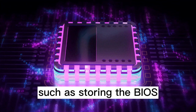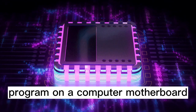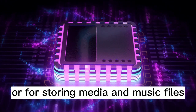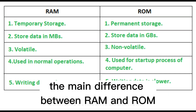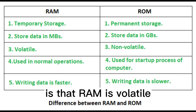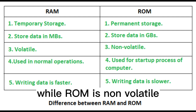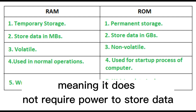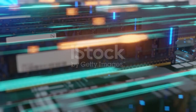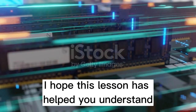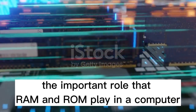Such purposes include storing the BIOS program on a computer motherboard, or for storing media and music files. The main difference between RAM and ROM is that RAM is volatile, meaning it requires power to store data, while ROM is non-volatile, meaning it does not require power to store data.